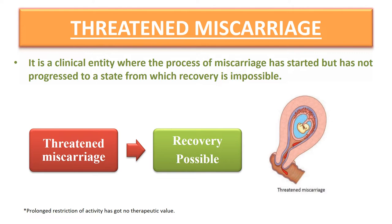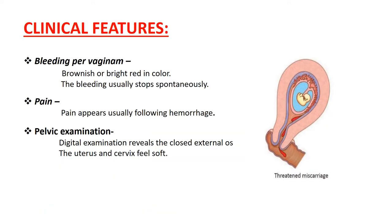Threatened miscarriage is a clinical entity where the process of miscarriage has started but has not progressed to a state from which recovery is impossible — meaning recovery is still possible. Clinical features include bleeding from the vagina, which is usually slight and may be brownish or bright red in color, and usually stops spontaneously. Bleeding is usually painless but there may be mild backache or dull pain in the lower abdomen. Pelvic examination reveals a closed external OS, and the uterine size corresponds to the period of amenorrhea.